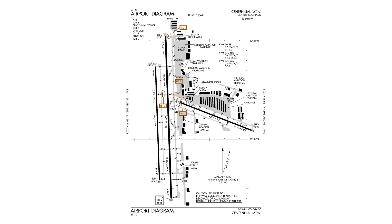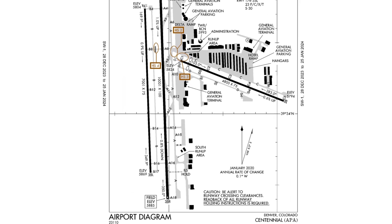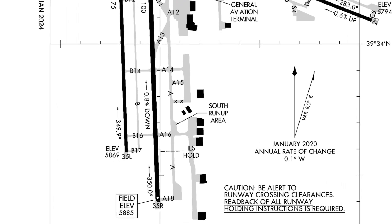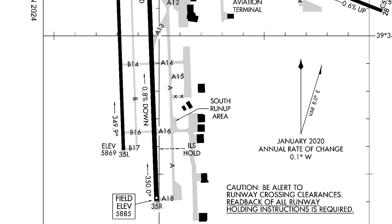This is the taxiway diagram of Centennial Airport in Denver. The largest runway here is 3-5 right at 10,000 feet. Very close to this runway is the parallel 3-5 left at only 7,000 feet.